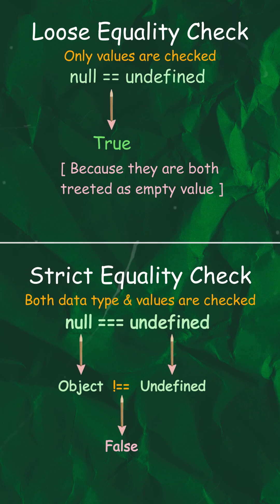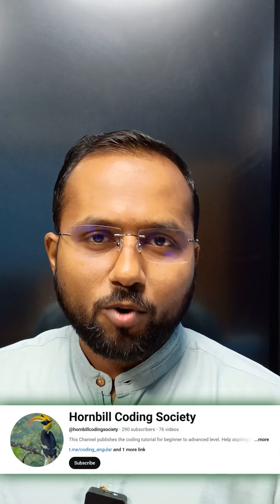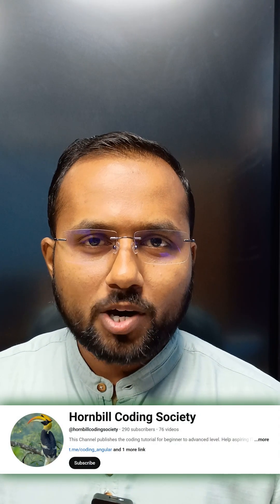So use loose equality when you're being loose, but use strict equality when you are serious. To quickly summarize: the value is the same but the type is not. Hit like and subscribe for more JavaScript nuances.